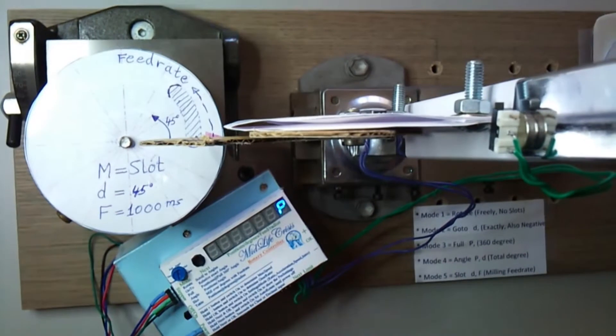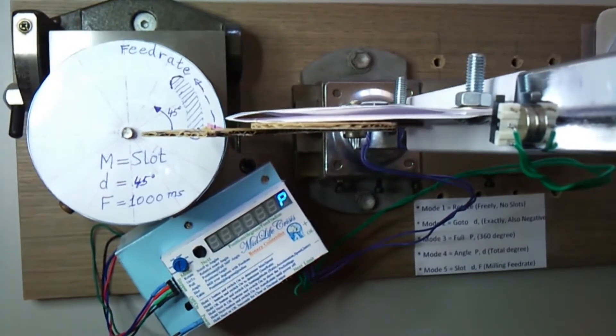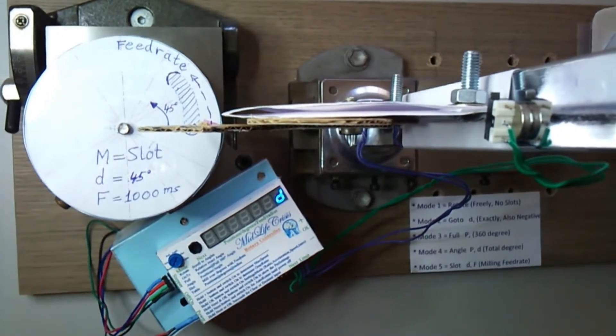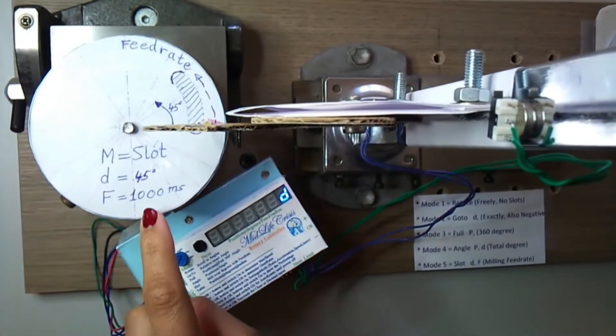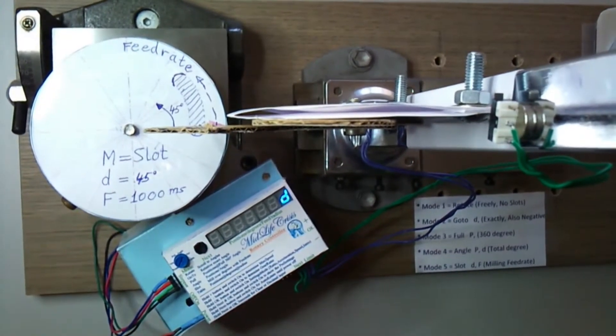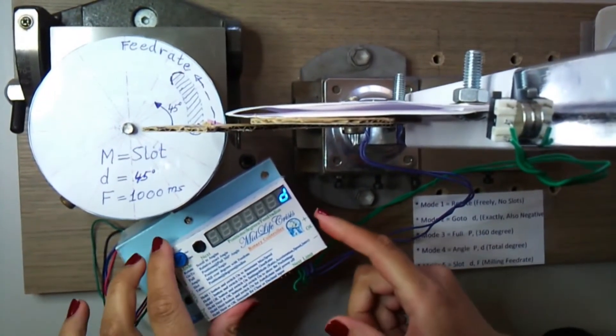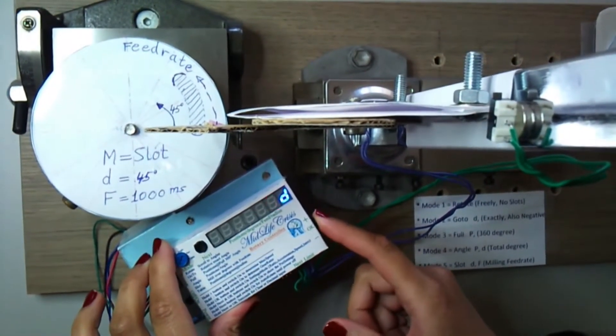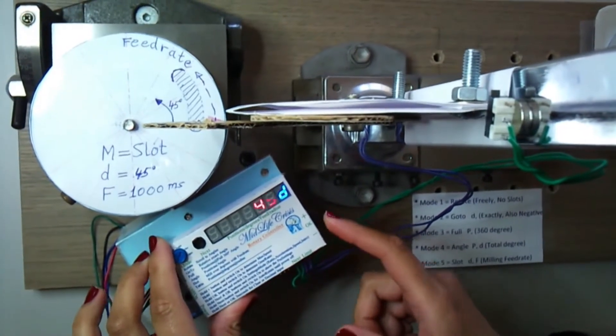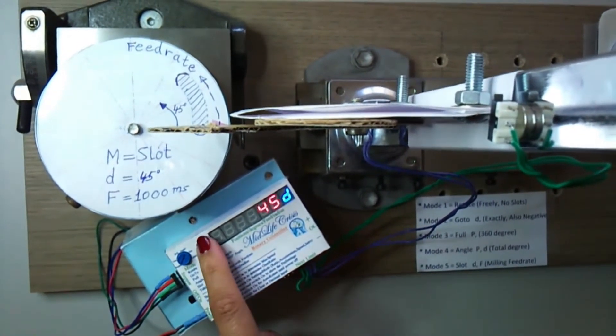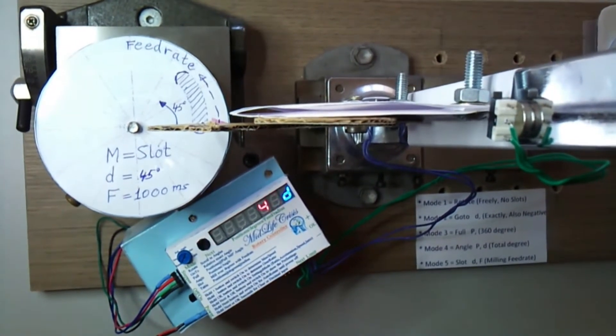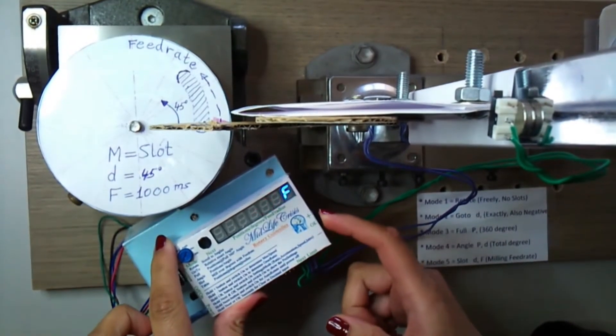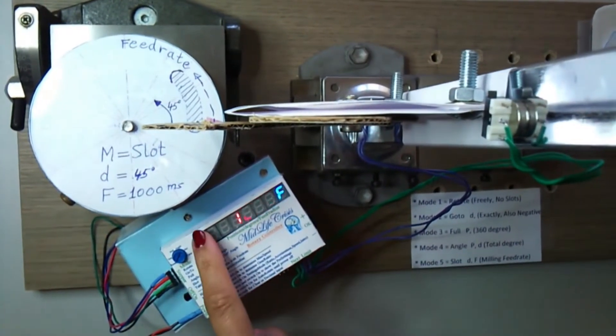Fifth mode is slot. With the mode switch we select slot. We want to make a slot of 45 degrees and 1000 milliseconds between stepper pulses. So we enter 45 degrees. We accept the value by pressing next. Now we enter 1000 milliseconds for feeding. We press next to accept the value.